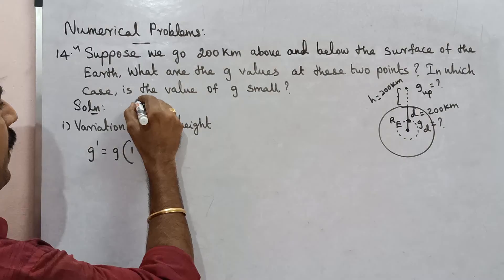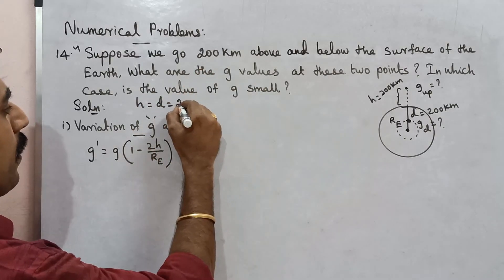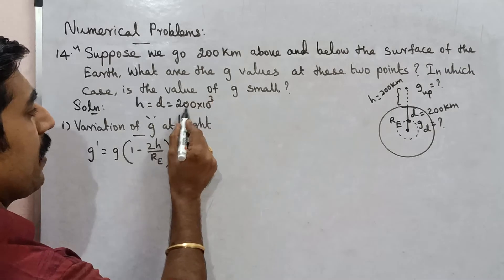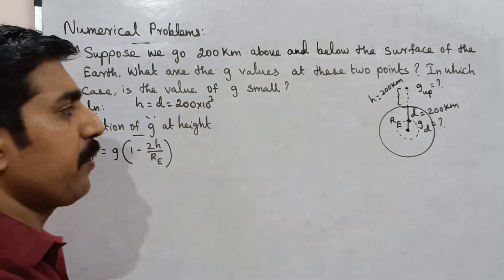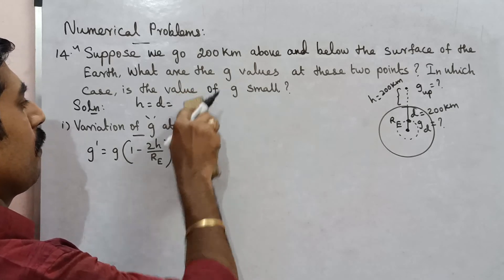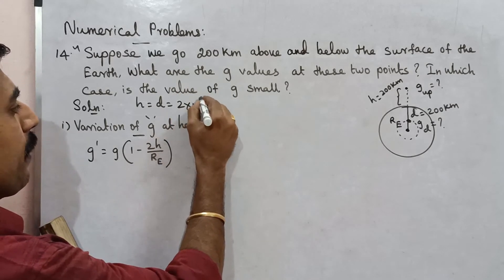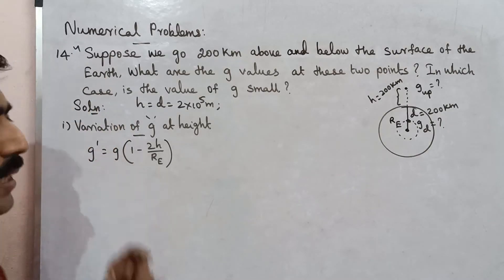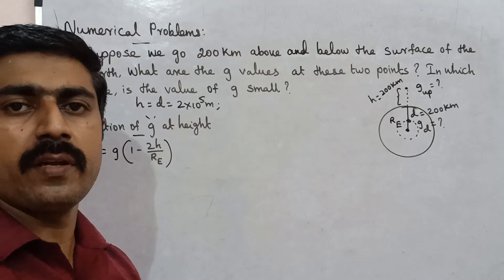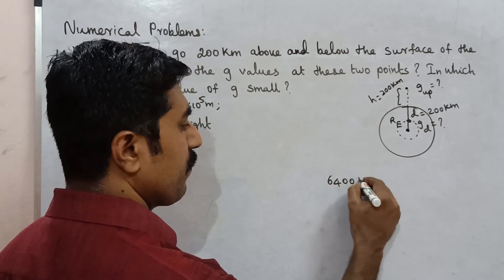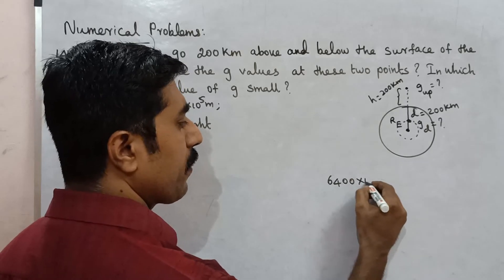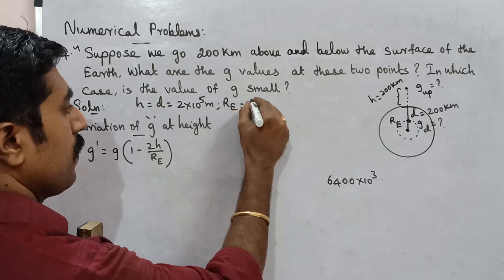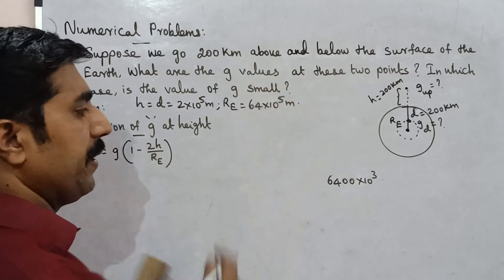First data: height, depth, two. One value is 200 kilometer, that's 2 times 10^5 meters. Height, depth, 2 times 10^5 meter. The next, formula: radius of earth is 6400 kilometer, that's 64 times 10^3, which equals 64 times 10^5 meter.